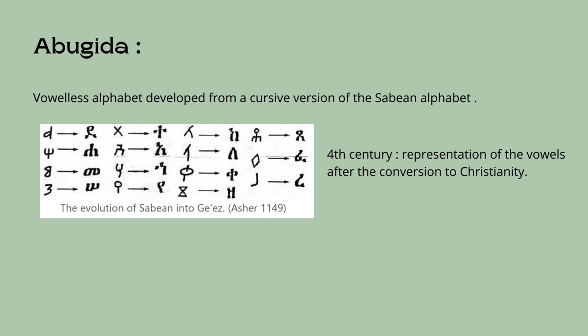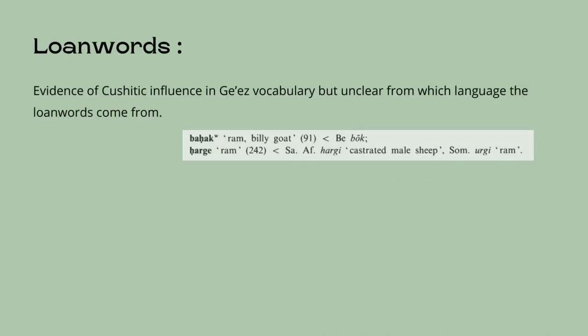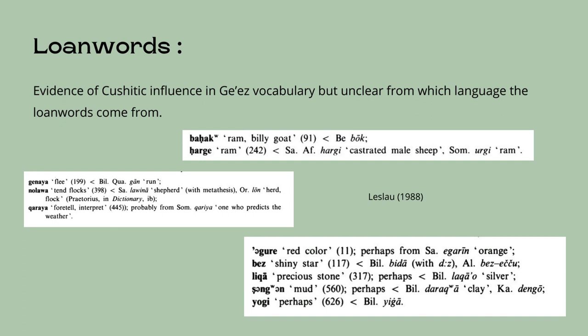Angular forms of the letters changed to rounded forms. In the fourth century, the representations of the seven vowels were introduced in the alphabet when the Aksumites converted to Christianity. In the case of loanwords, the Ethiopian Bible was originally translated from Greek, but some words — especially names — do not always seem to have a Greek source; some seem to come from Semitic languages such as Hebrew. Whether the transmission of the names was accompanied by oral tradition through Jewish speakers of Amharic or due to later revisions using Arabic models is unclear. However, there is evidence of Cushitic influence in Old Ethiopic vocabulary, especially in categories such as animals, plants and vegetables, parts of the body, and instruments and tools. It is difficult to ascertain which Cushitic language was the source of the borrowing.